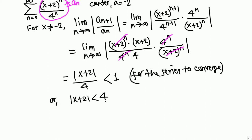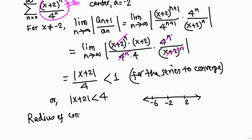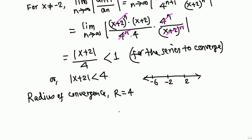So |x+2| < 4 — and note you cannot subtract 2 from inside the absolute value. This 4 is the radius of convergence. The center is negative 2, and with radius 4 we go 4 to the right: negative 2 plus 4 is 2; and 4 to the left: negative 2 minus 4 is negative 6. So the radius of convergence is 4.